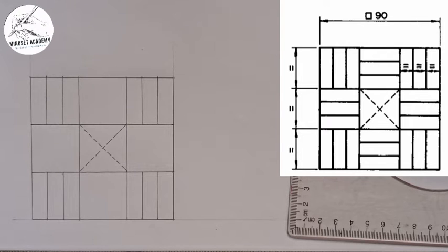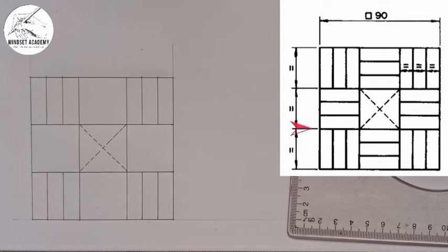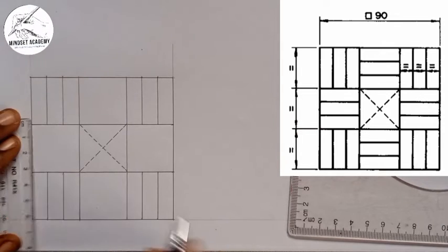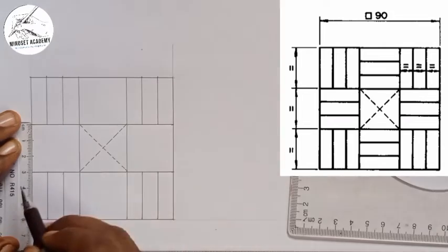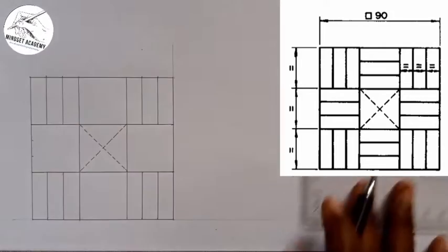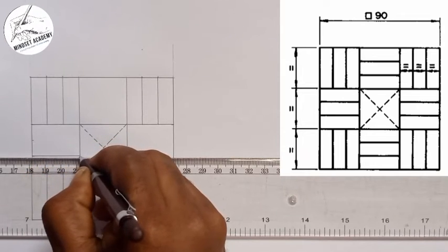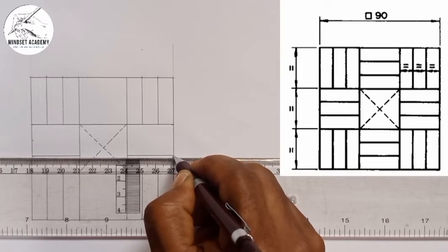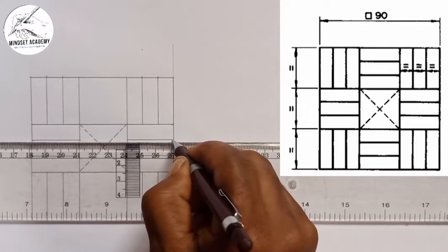Now looking at the right hand side, we have horizontal lines at the second box along the Y-axis — this box here and this box here. There are three demarcations — dividing 30 by 3 gives 10mm. I'll measure 10mm vertically. I'll use my C-square and T-square to draw horizontal lines: draw a line, leave the space, come to the next point, and draw another one.